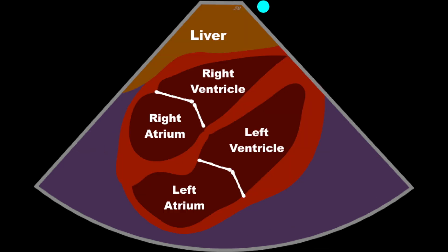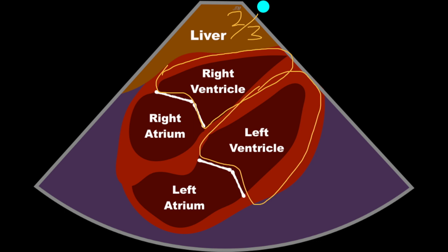We can also look at the sub-xiphoid view and compare the right ventricle to the left ventricle, though it's not as good as the apical view. But if we were to look in this view and see a right ventricle that is greater than two-thirds the size of the left ventricle, we'd want to be concerned that there's enlargement. This view can underestimate the size of the right ventricle at times, simply due to the fact that you may not be exactly in-plane and the right ventricle does not have as strong an appearance in the sub-xiphoid view compared to the apical view.